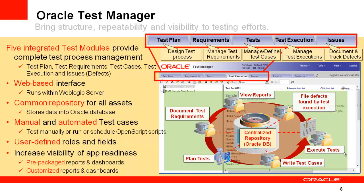Oracle Test Manager allows you to manage test modules and link them together to keep track of test status. You can execute both manual and automated tests — running manual tests hands-on or executing functional testing scripts created in OpenScript. You can also schedule tests to run unattended. Oracle Test Manager provides a default set of predefined user roles and UI fields that are customizable to your organization's needs, along with pre-packaged and customizable reports.